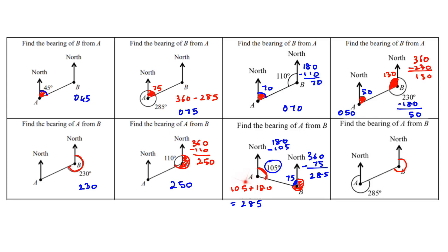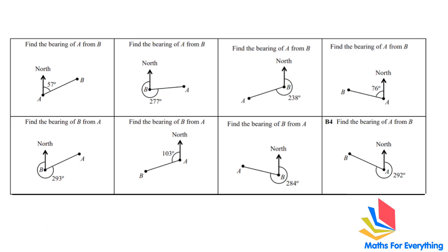The next one is a little longer. First, we find the angle at A: 360 minus 285 gives 75. Then to find the reflex bearing at B, we add 180 to 75, which gives 255. So the bearing of A from B is 255.